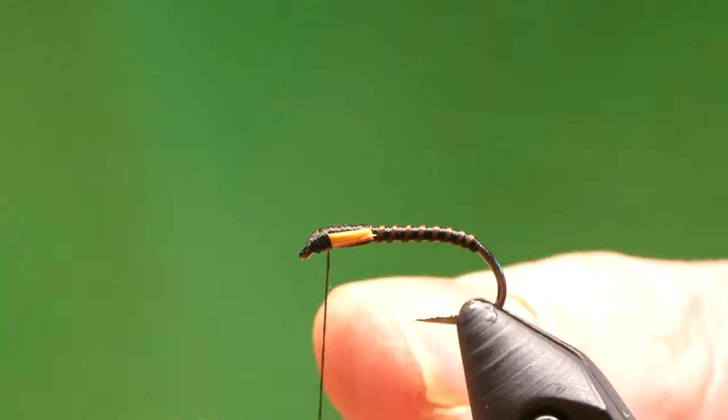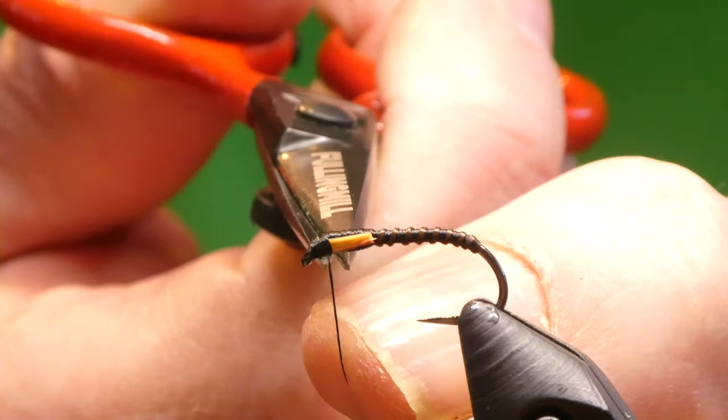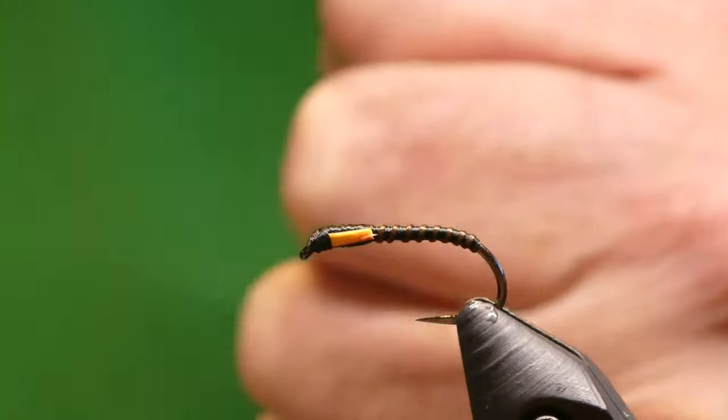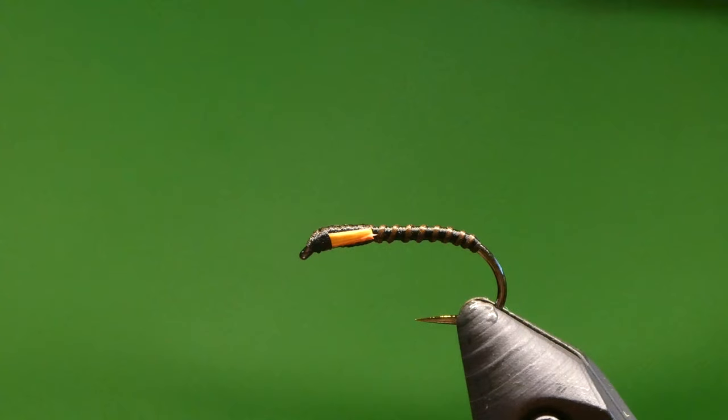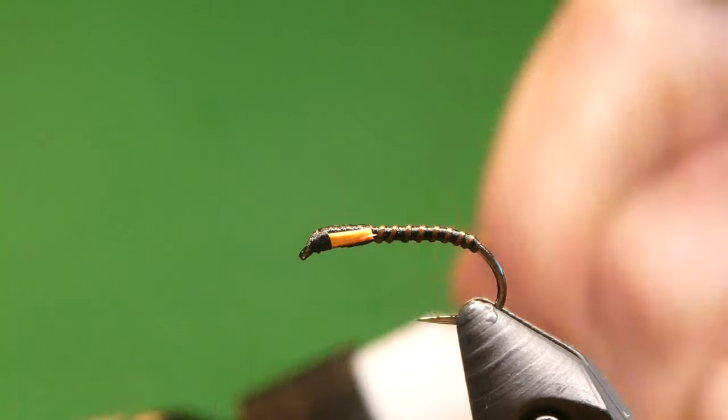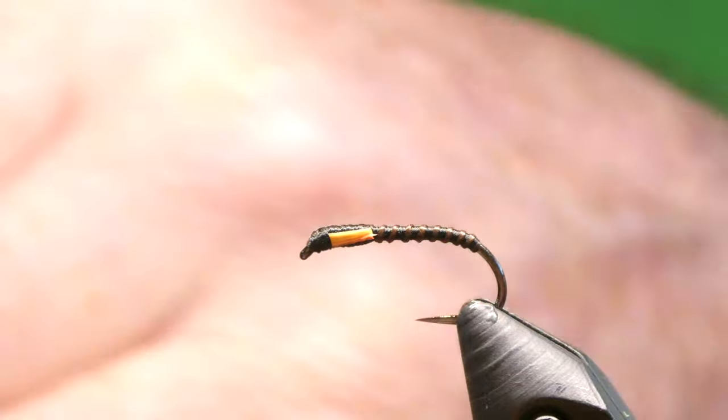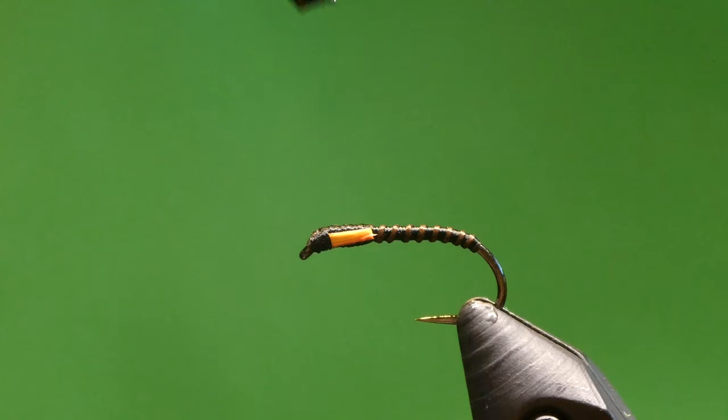That's it. So that's the fly done. Now what we're going to do is coat it with resin. Got the gulf resin, so just apply this very thinly, a thin coat.